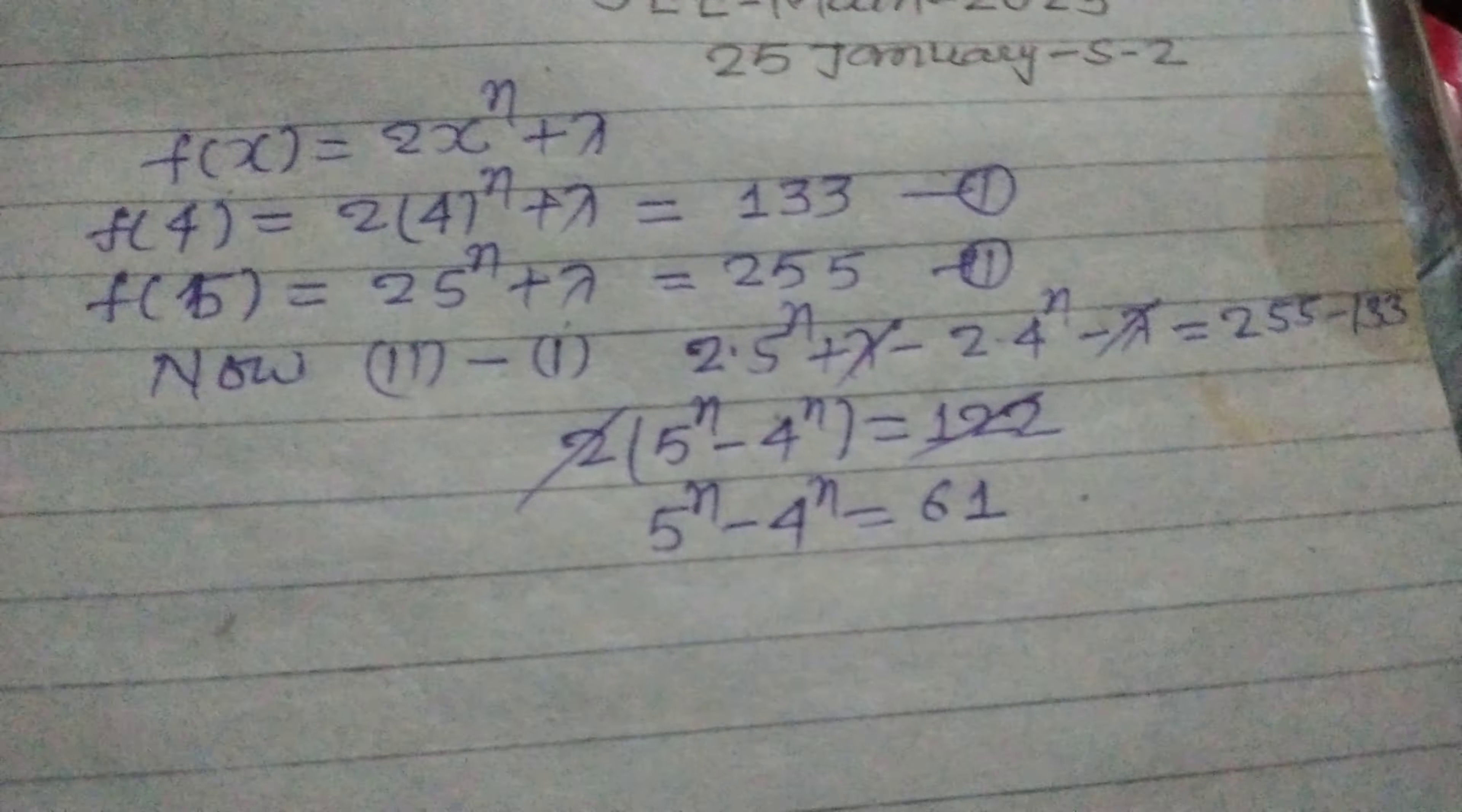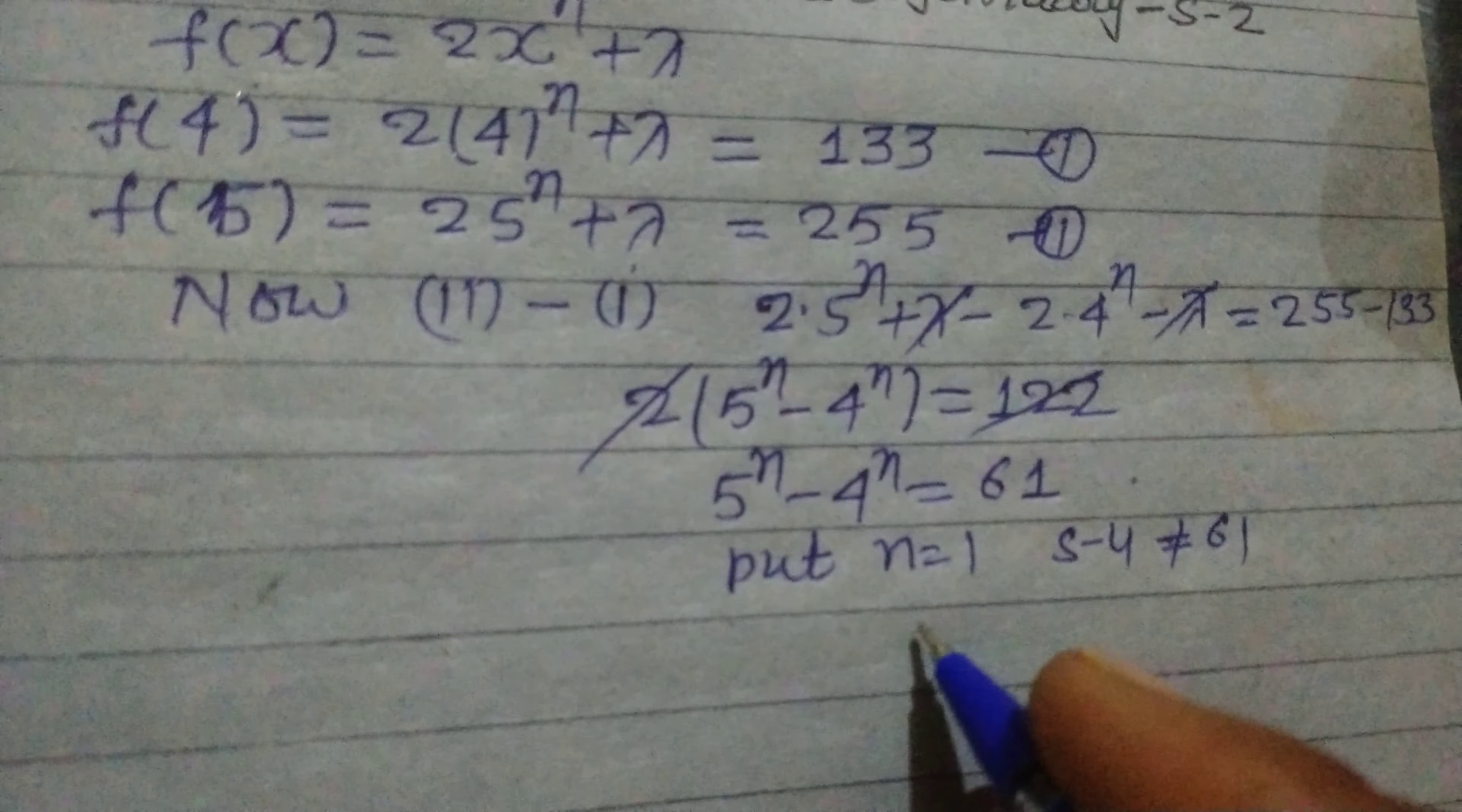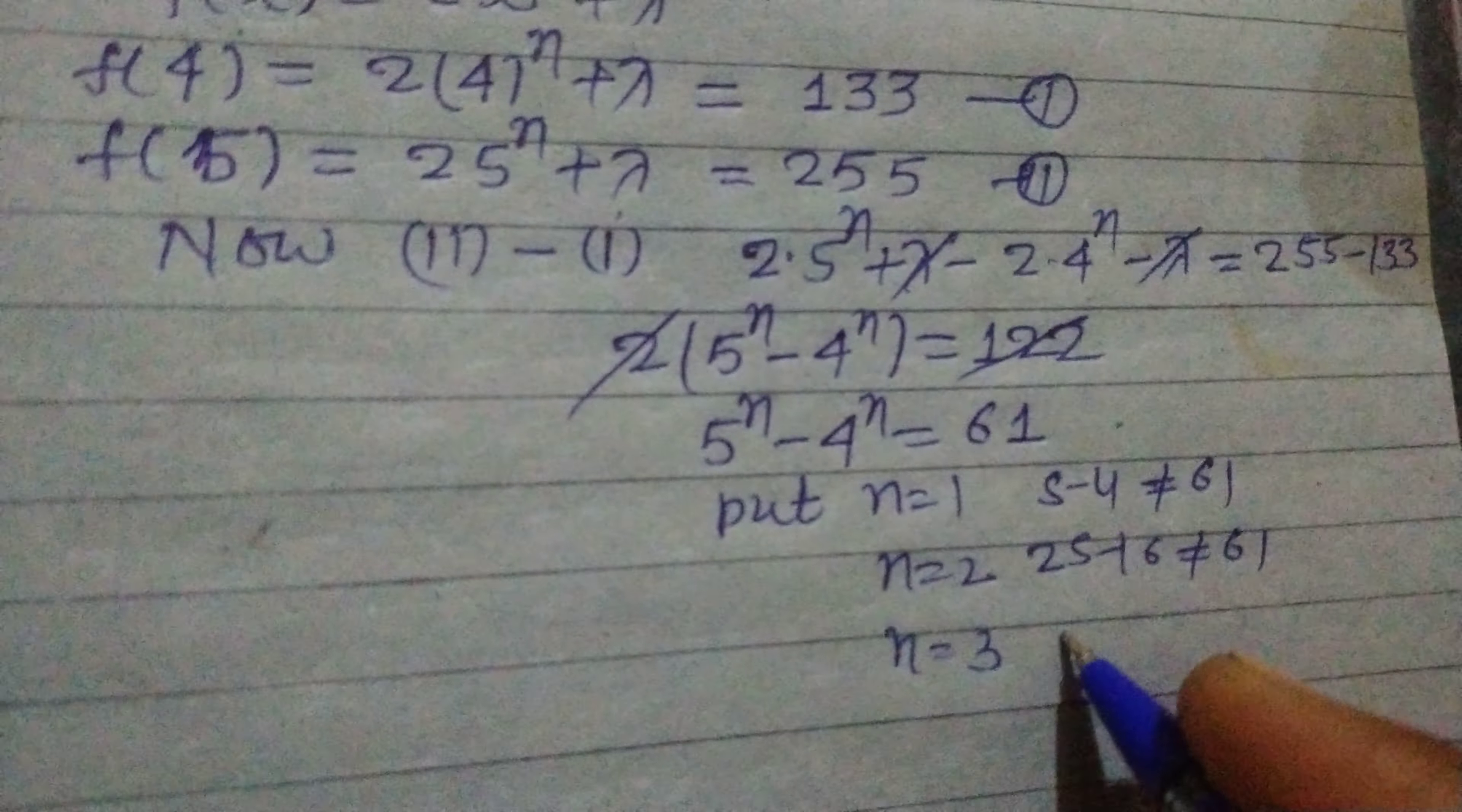So this is 61. If we put value of n = 1, we get 5 - 4 = 1, which is not equal to 61. If we put n = 2, we get 25 - 16 = 9, which is not equal to 61. If we put n = 3, it is 125 - 64.